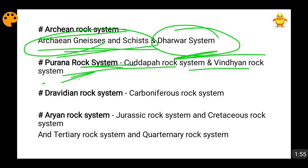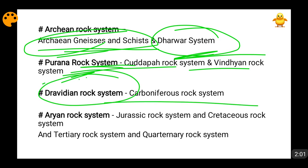After that comes the Dravidian rock system. It contains the Carboniferous rock system. As the name suggests, Carboniferous rock systems are those rocks which contain coal in them. At this point in time, the formation of coal started friends. So these rocks are very rich in coal and high quality coal. Carboniferous rocks are found very less in India because high quality coal is not found in very high quantity in India.